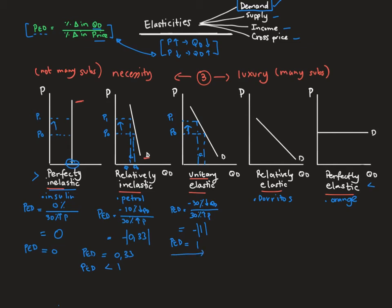In the relatively elastic case, things change. If there's an increase of 10% in price, we experience a much larger decrease in quantity demanded — because many substitutes are available for this product, and if the price increases by a little, we have a big reaction and can consume something else. For example, a 10% increase in price leads to a 30% decrease in quantity demanded, giving us negative three, or an absolute value of three. The price elasticity of demand for a relatively elastic good is always greater than one.